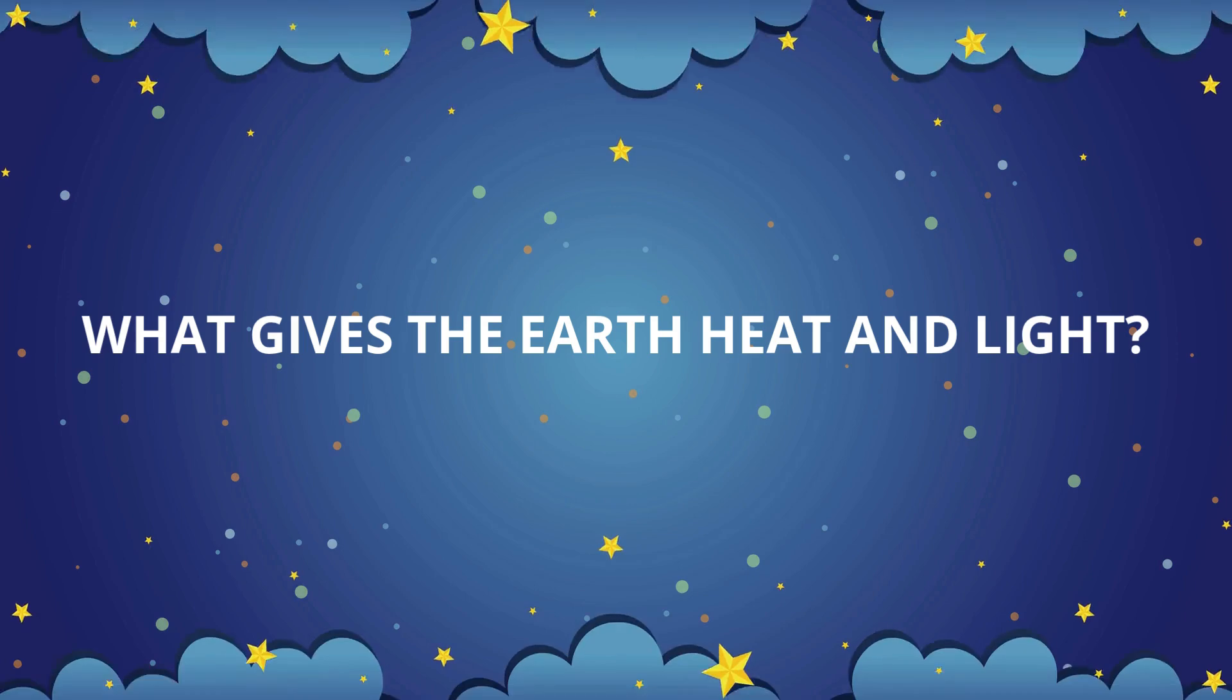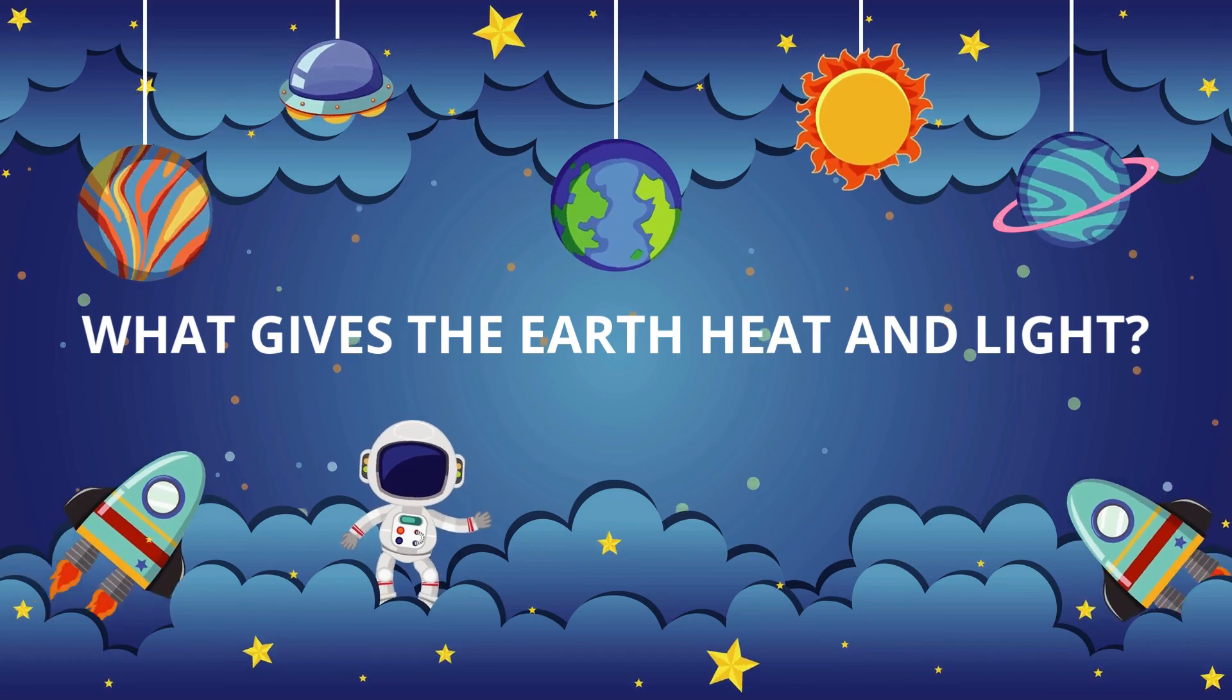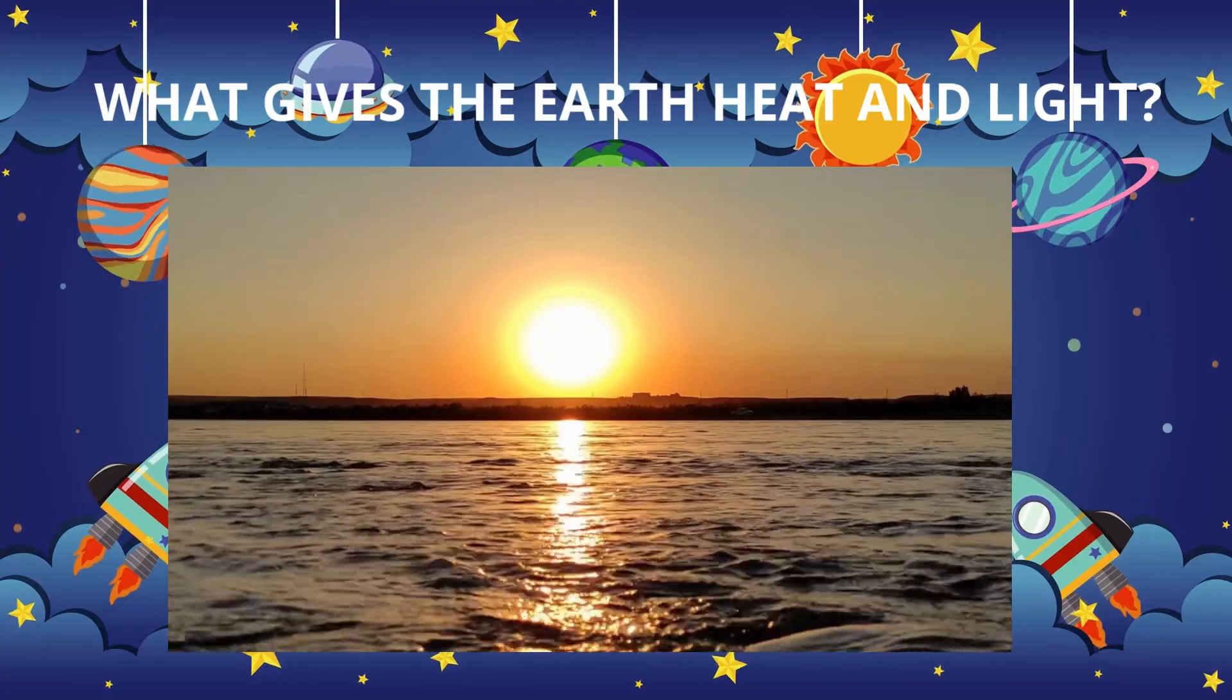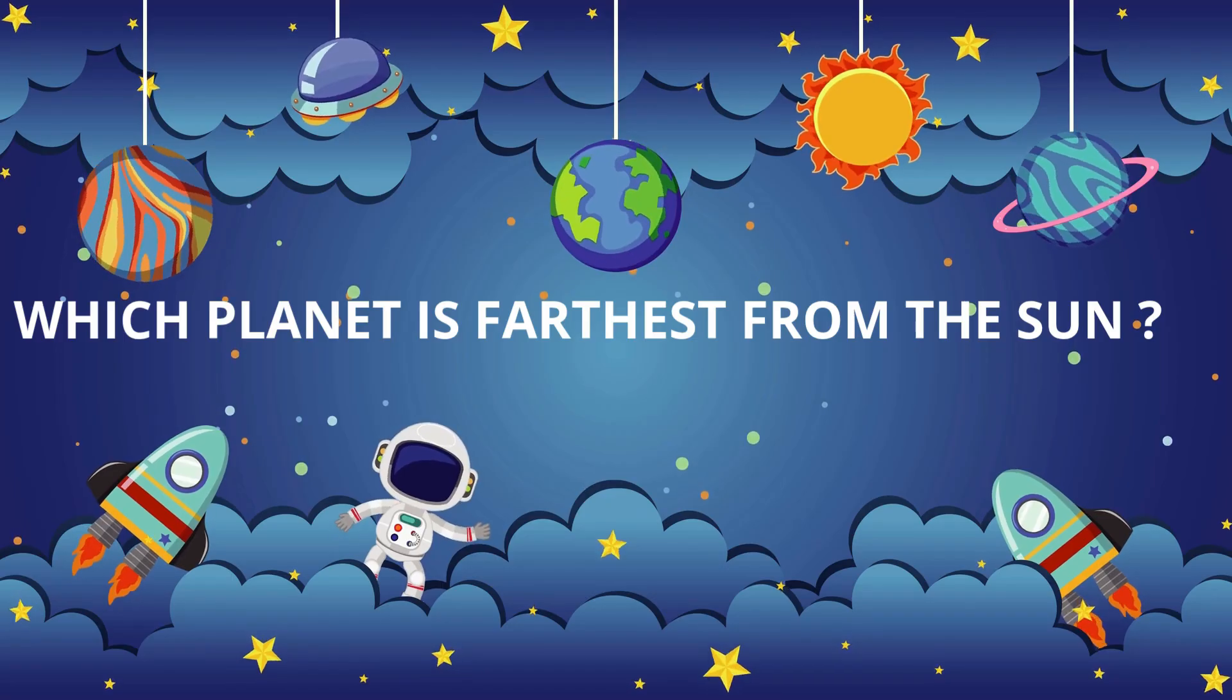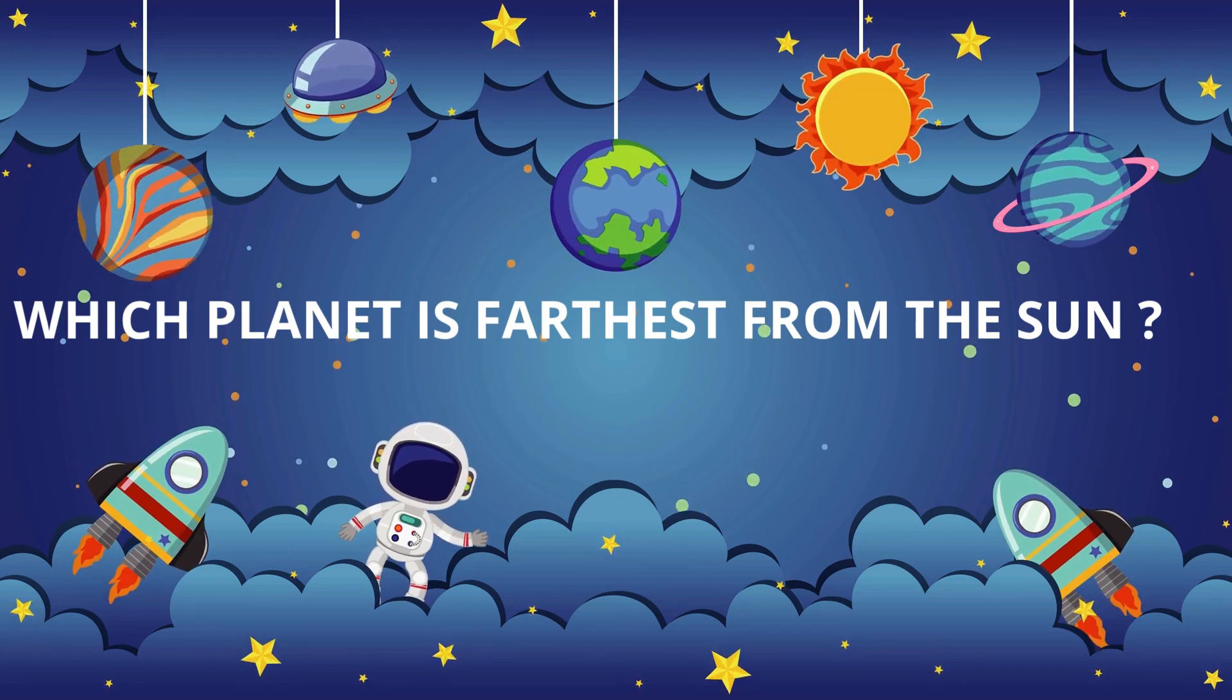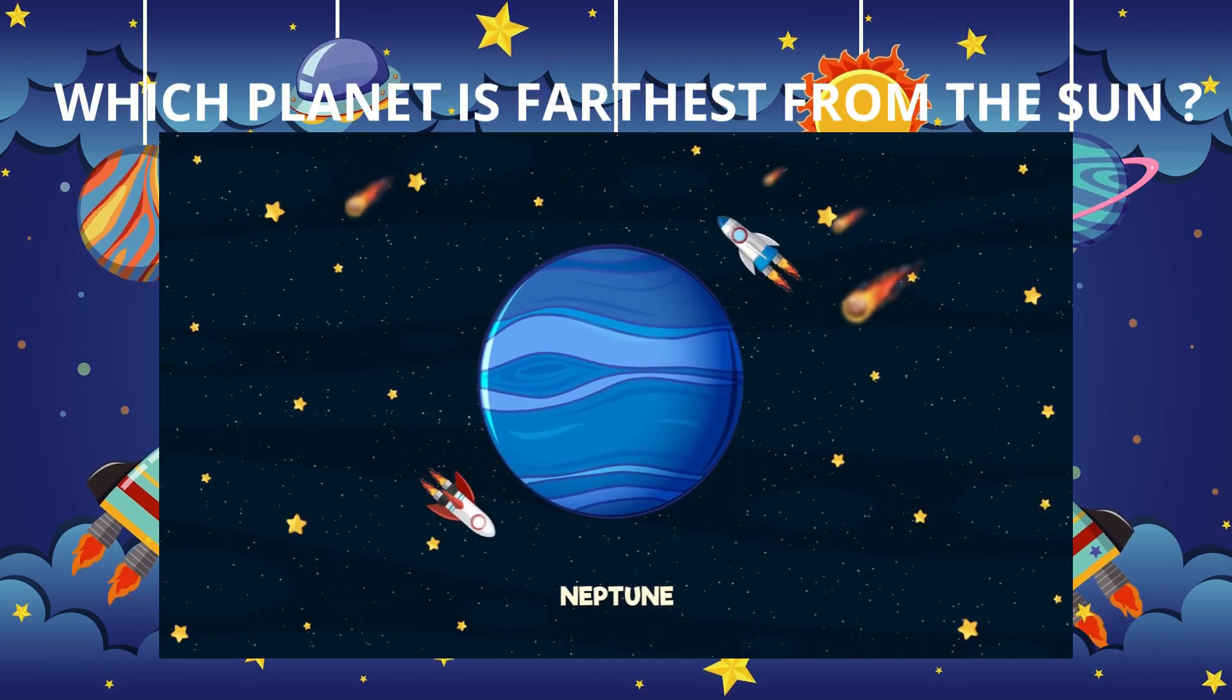What gives the Earth heat and light? The moon, the stars, the sun. The answer is the sun. Which planet is farthest from the sun? Neptune, Mercury, Earth. Good job, it's Neptune.